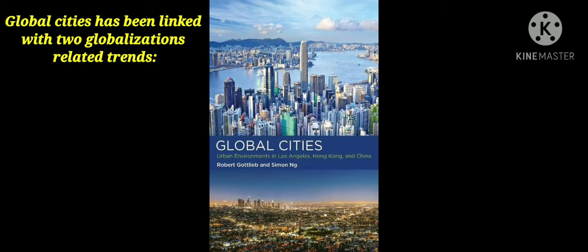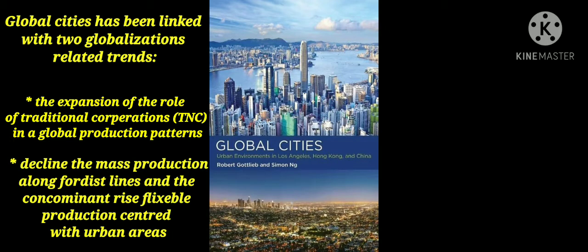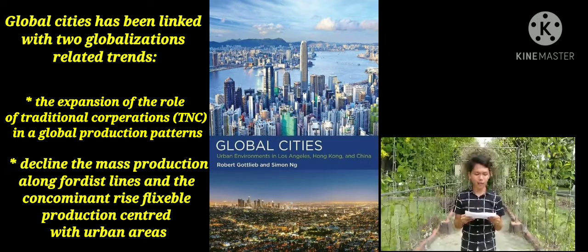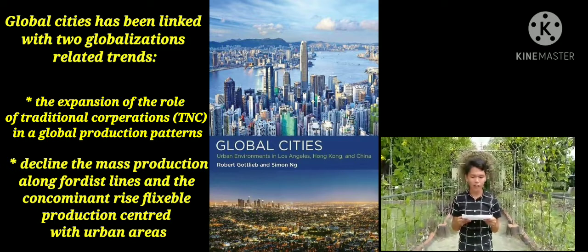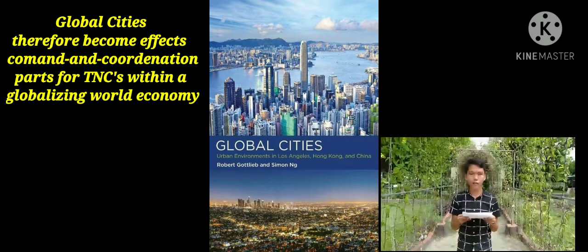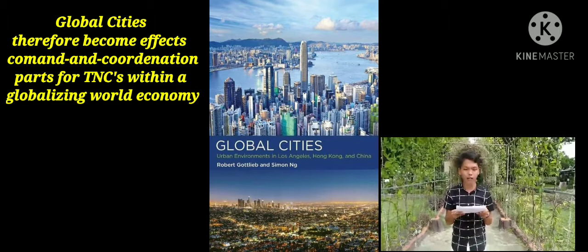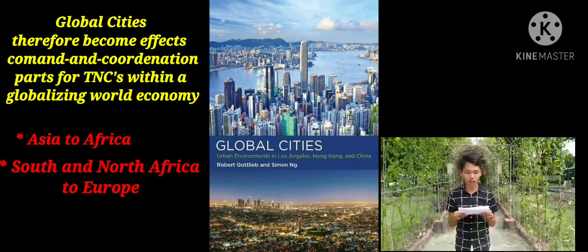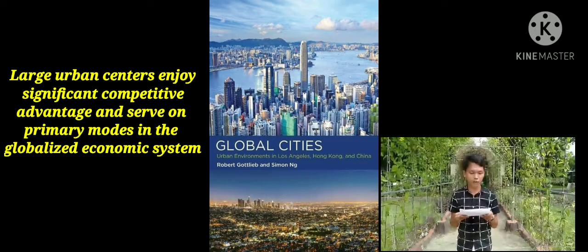Global cities have been linked with two globalization-related trends. First is the expansion of the role of traditional corporations in global production patterns. The second is the decline of mass production along fordist lines and the concomitant rise of flexible production centered in urban areas. These two trends explain the emergence of a network of certain cities serving the financial and service requirements of transnational corporations, while other cities suffer the consequences of deindustrialization and fail to become global. Global cities therefore become command and coordination points for TNCs within a globalizing world economy, playing an increasingly important role at the global and regional level, from Asia to Africa, and from South and North America to Europe.